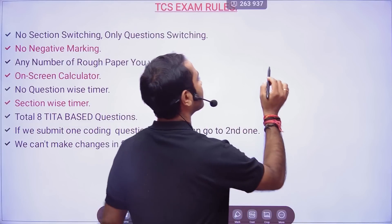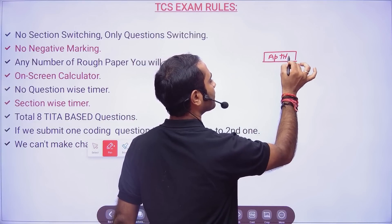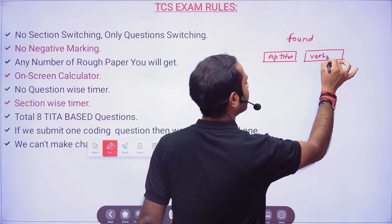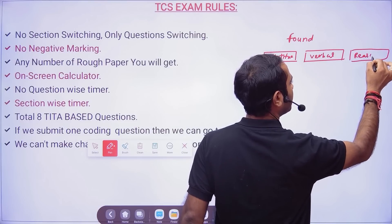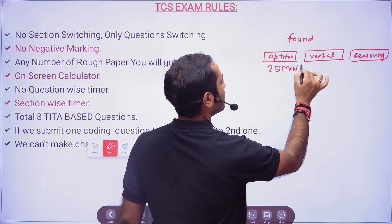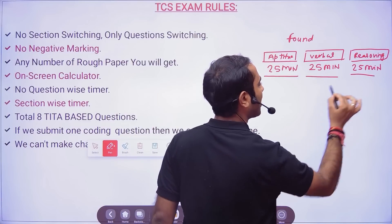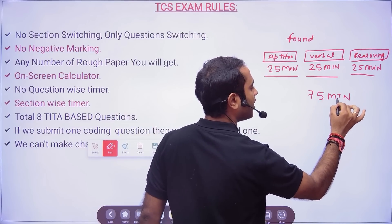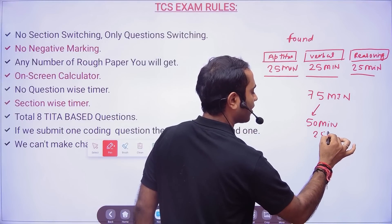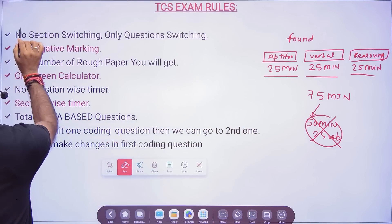In the foundation section there are three sections: aptitude, verbal ability, and reasoning ability. The time limit is 25 minutes per section — 25 minutes for aptitude, 25 for verbal, and 25 for reasoning, giving you a total of 75 minutes. This time is fixed and equally distributed. It is not the case that you can spend 50 minutes on aptitude and the remaining 25 on verbal and reasoning. No section switching is allowed.